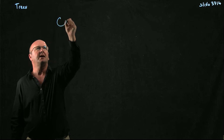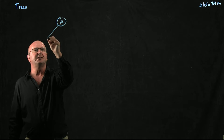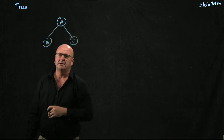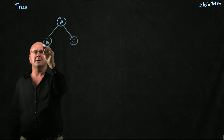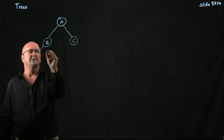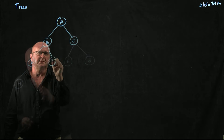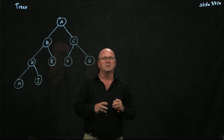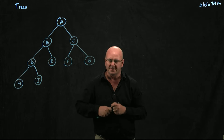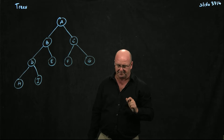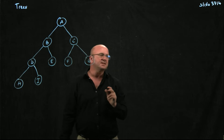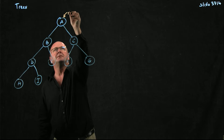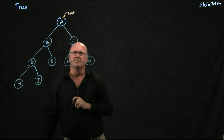So here's a tree, and for this particular tree, I'm going to label my tree with letters, but mostly we actually use numbers. There are different terms that describe different parts of the tree. The first thing, the most important part of the tree, is the root — the root of the tree.